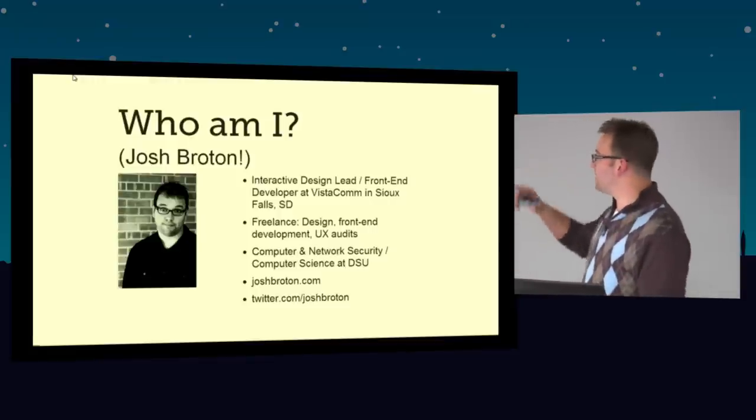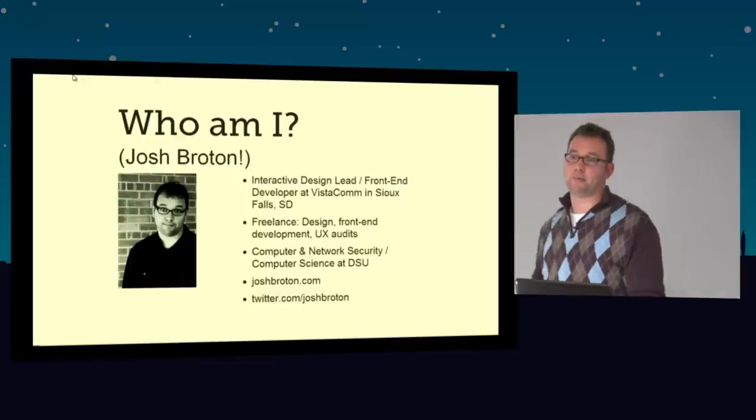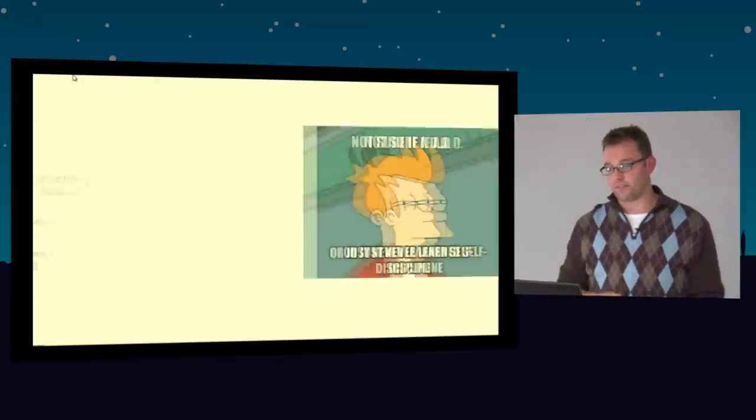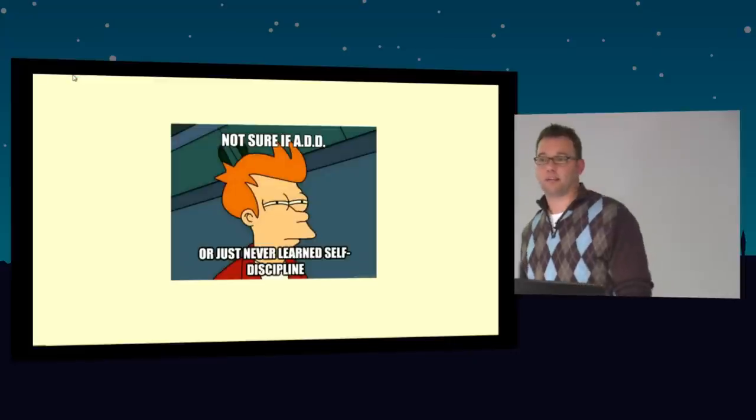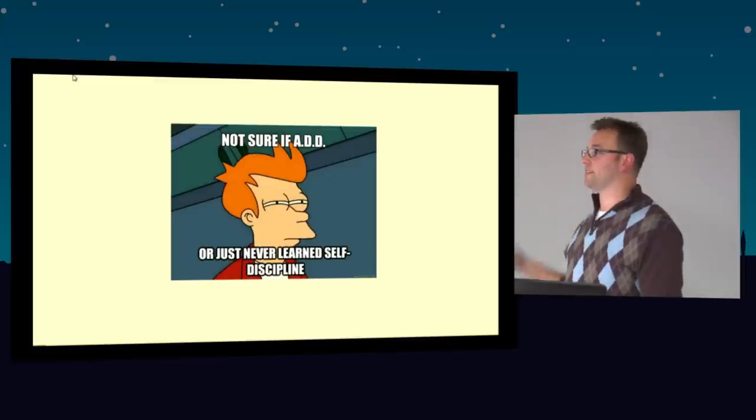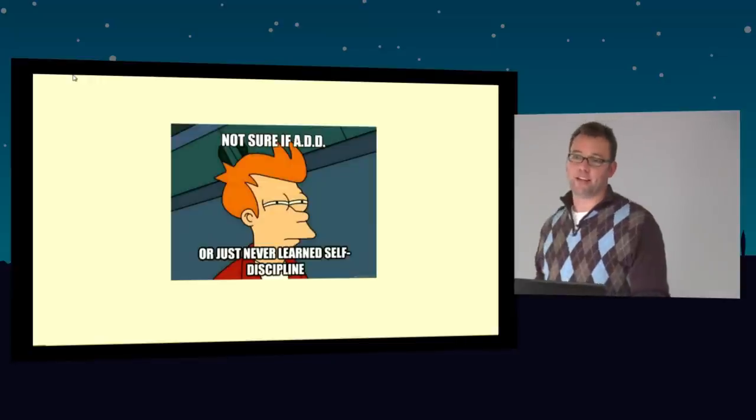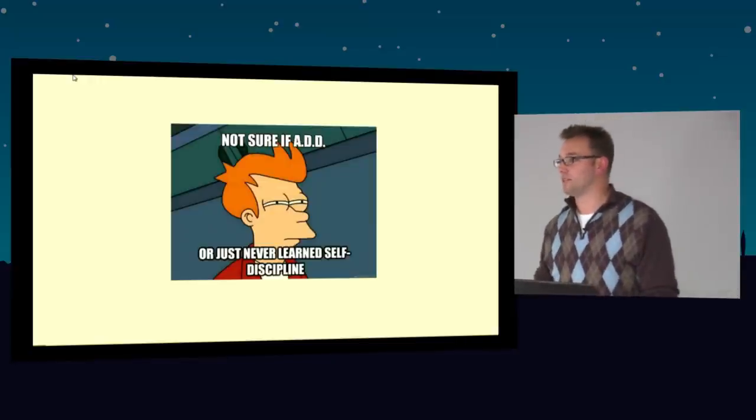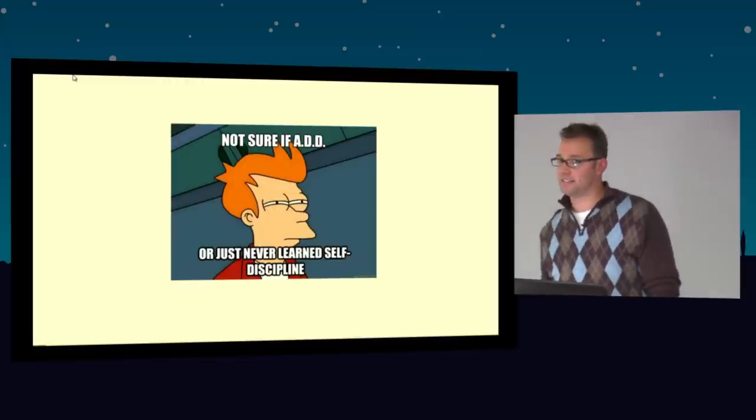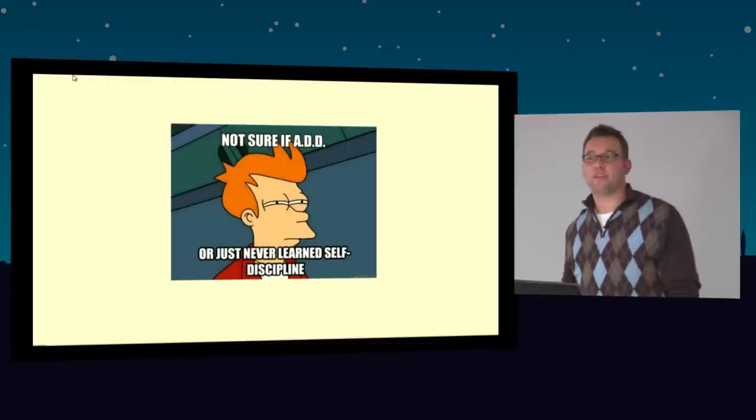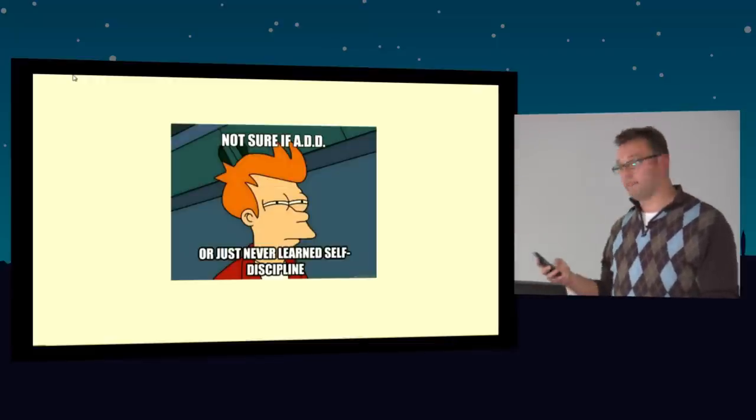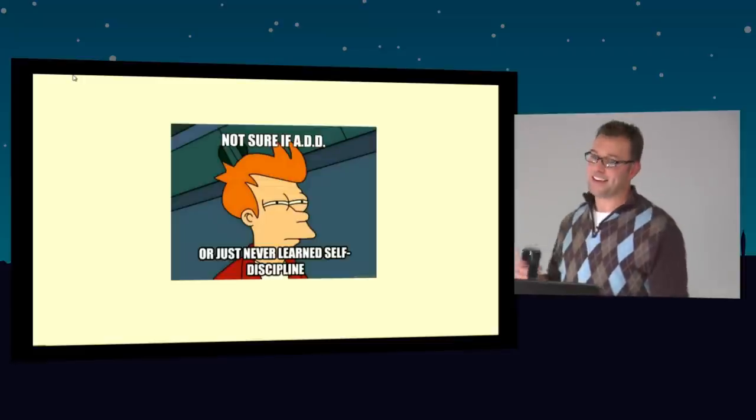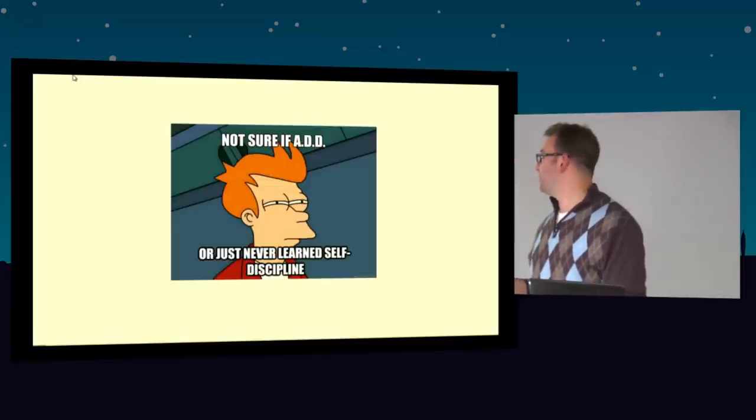I have finished my computer network security degree at DSU and I'm just finishing up the second major in computer science. I've got a website, joshbroden.com, and you can find me at twitter.com/joshbroden. This here is the warning I have to give at the beginning of every single one of my talks. I have moderate to severe adult ADD, so I tend to get off the rails rather easily. If I do that, just wave your hands, jump up and down, or leave. Just know that I'm doing my best.